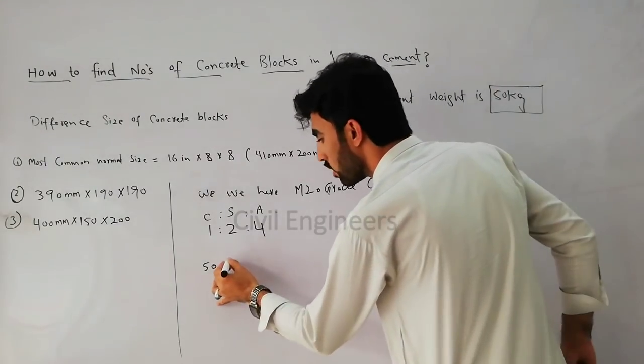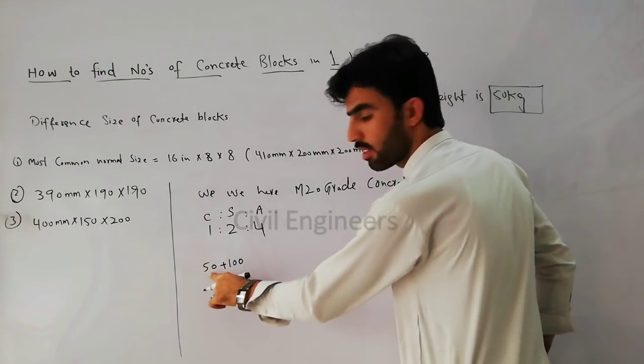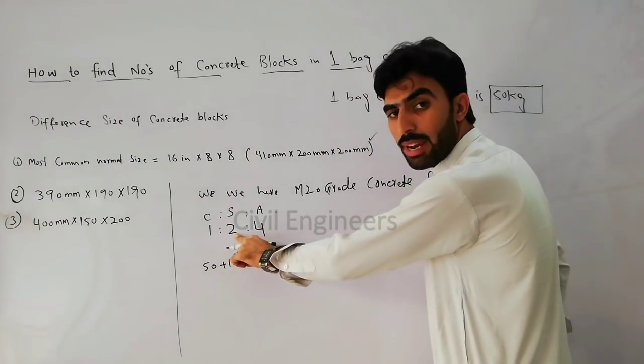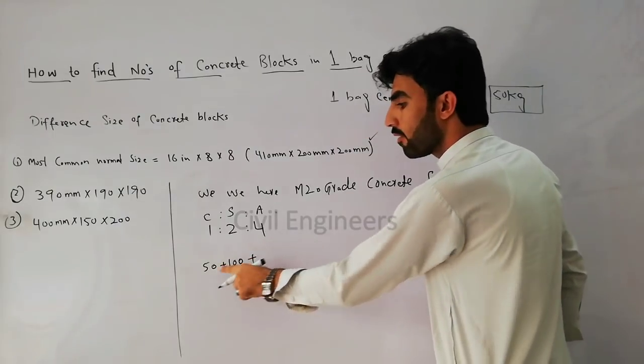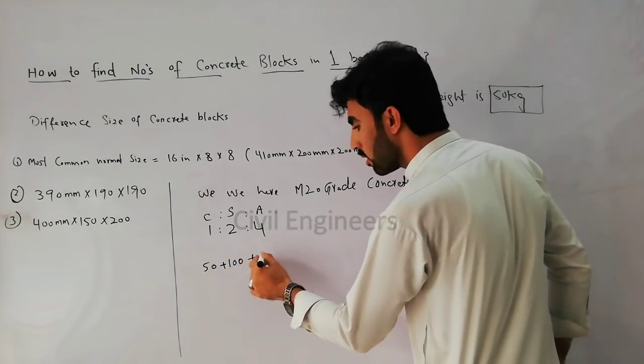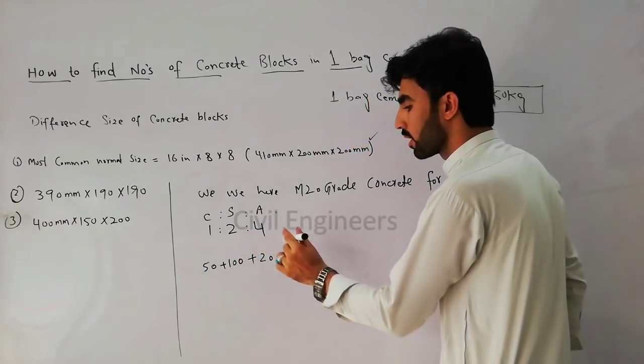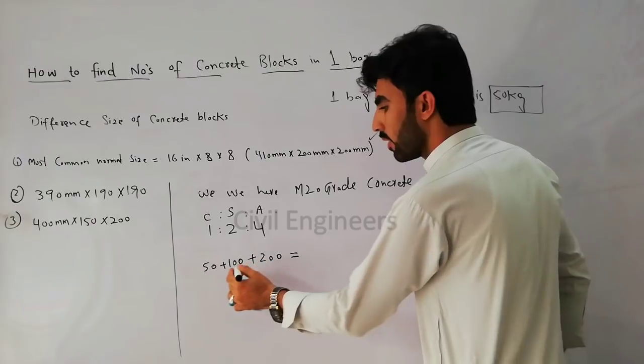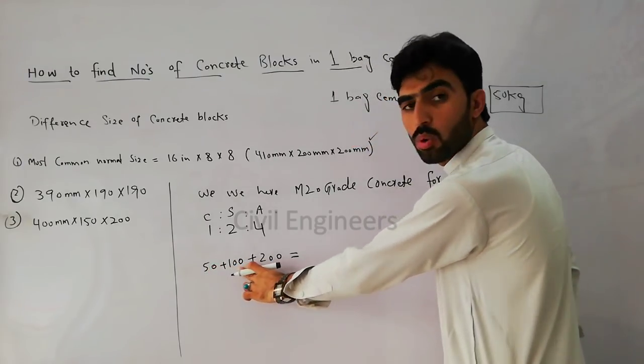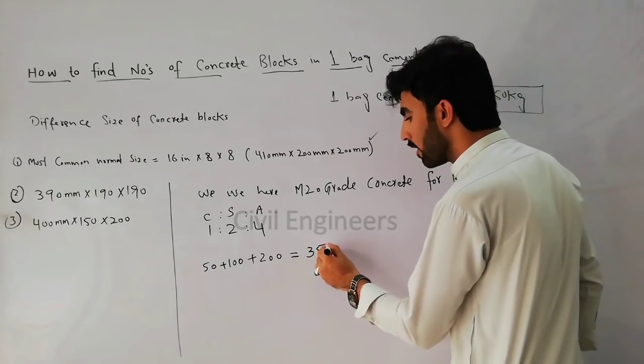And four parts aggregate, so it will be 50 times 4 equals 200. Now 50 plus 100 plus 200, it will come 350 kg total weight of M20 grade concrete used for concrete blocks.